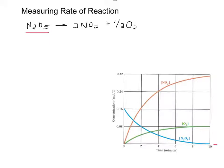Similarly, the concentration of NO2, since it's a product — if you follow the red line in the graph — it's going to increase over time. Products get produced, so the amount of them is going to increase. When you look at oxygen, it also increases if you look at the green line. But it doesn't seem to increase as fast or by as much. Why is that?